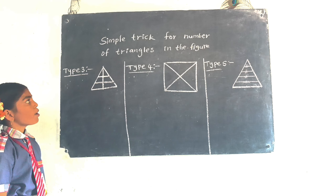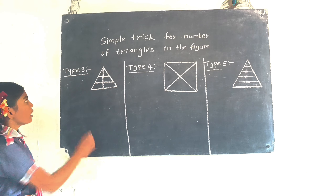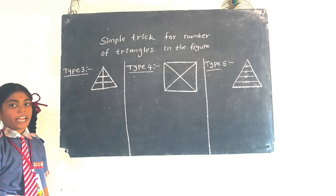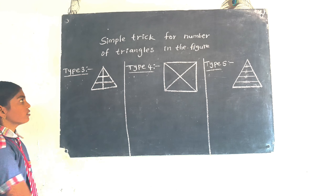Simple trick for number of triangles in the figure. Type 3 is the addition method.